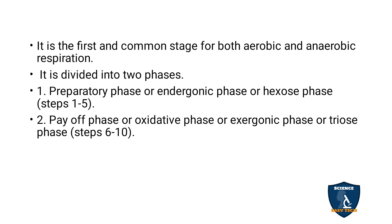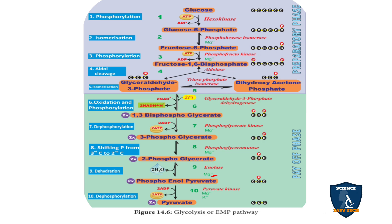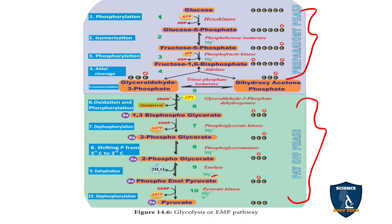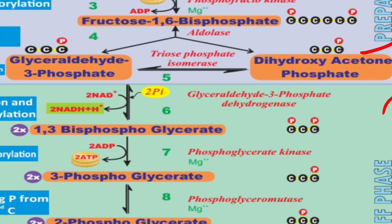Glycolysis is the first common stage in both aerobic and anaerobic respiration. It has two phases: the preparatory phase (also called endergonic phase or hexose phase), which covers steps 1 to 5; and the payoff phase, which covers steps 6 to 10.